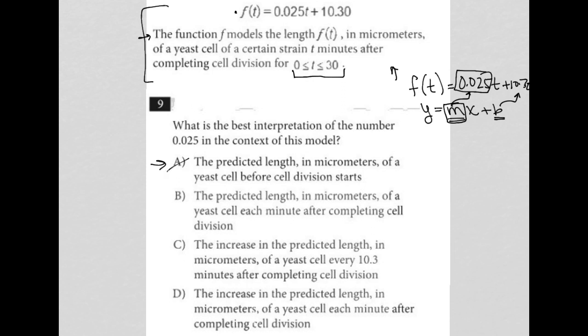Choice B, the predicted length in micrometers of a yeast cell each minute after completing cell division. The predicted length, that's kind of weird. It's almost there, right? The whole each minute part is part of slope. Because if you remember, slope is just rise over run.